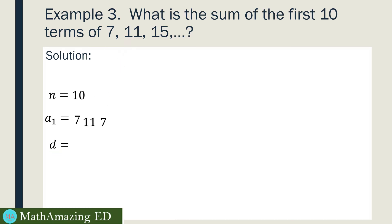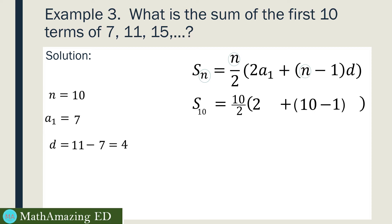In order to solve for d, you just subtract the second term, which is 11, by the first term, which is 7. So 11 minus 7 is 4. And then substitute to our second formula, since d is given here. So we have S sub 10 equals 10 divided by 2 times quantity 2 times a sub 1, or the first term that we have here, is 7, plus 10 minus 1 times d, which is equal to 4.